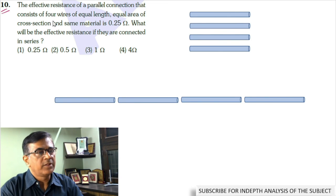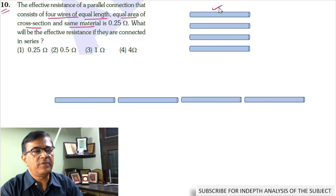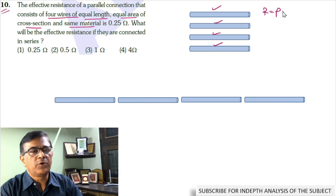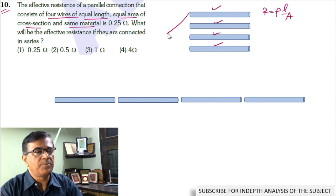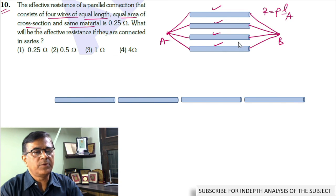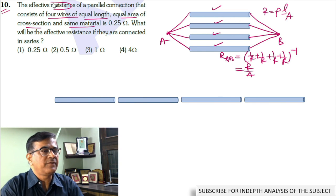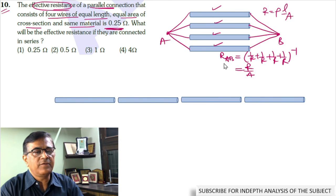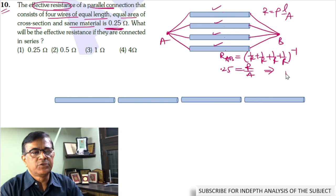In this problem, there are 4 resistance wires of equal length, equal area of cross section, and same material. Resistance is R equals rho L by A. If these resistances are connected in parallel between points A and B, the resistance of the combination should be RAB equals R by 4. According to the problem, the effective resistance is 0.25, which implies the resistance of each wire is 1 ohm.